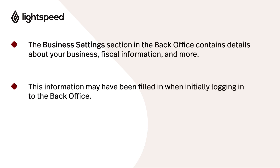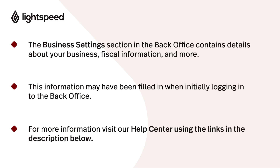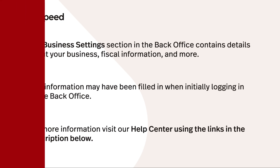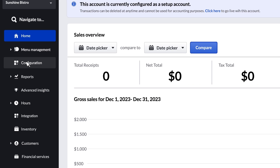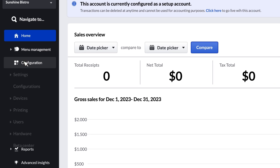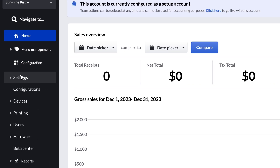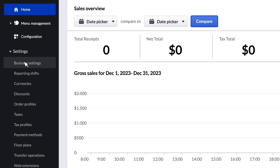You may have already completed some of this setup when you first logged into the back office, but it's worth going over these settings again to make sure they're correct. There are also some additional settings that we'll talk about. Log into the back office, and in the sidebar, click Configuration, Settings, and then Business Settings.